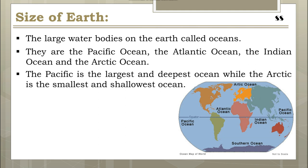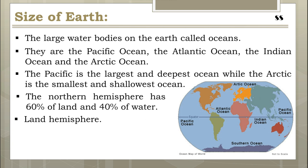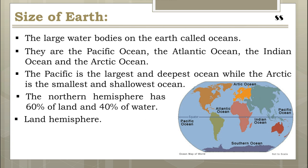The land and water bodies are unevenly distributed between the northern and southern hemispheres. The northern hemisphere has 60 percent of land and 40 percent of water, so it is called the land hemisphere. On the other hand, the southern hemisphere has 81 percent of water and 19 percent of land, so it is called the water hemisphere.